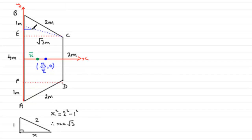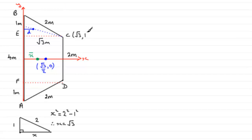To find the X coordinate of the center of mass of triangle BCE, I use the mean of the X coordinates of its vertices. Point C has coordinates (root 3, 1), point B has coordinates (0, 2), and point E has coordinates (0, 1).